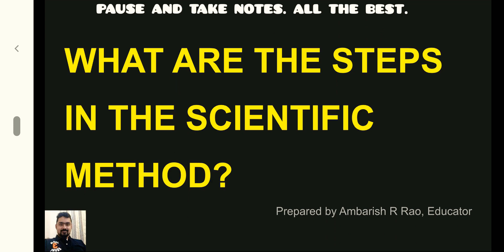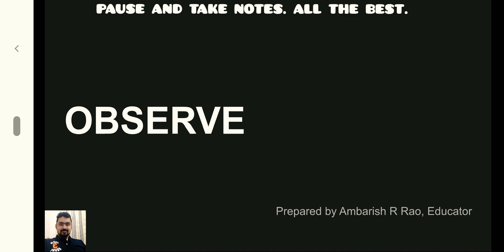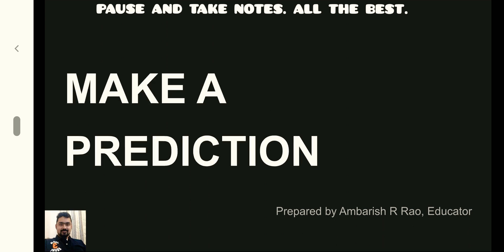What are the steps in the scientific method? Identify the problem, observe the situation or problem, gather information from different sources, and make a prediction.